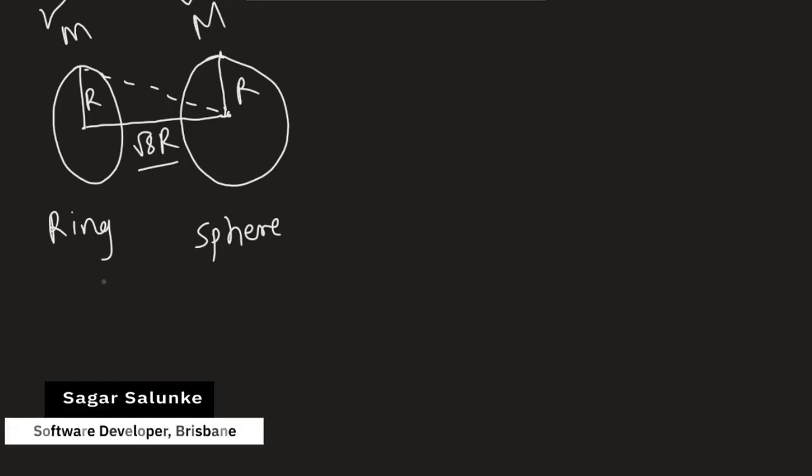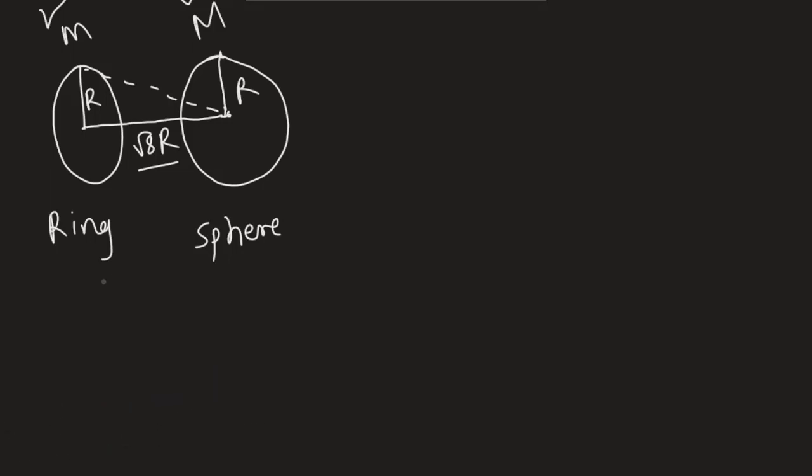We can easily find out the force using the standard formula that is G times M1 M2 divided by R square. But here, the problem is that this one is not a sphere, it is a ring. So we have to take a different approach to calculate the force.